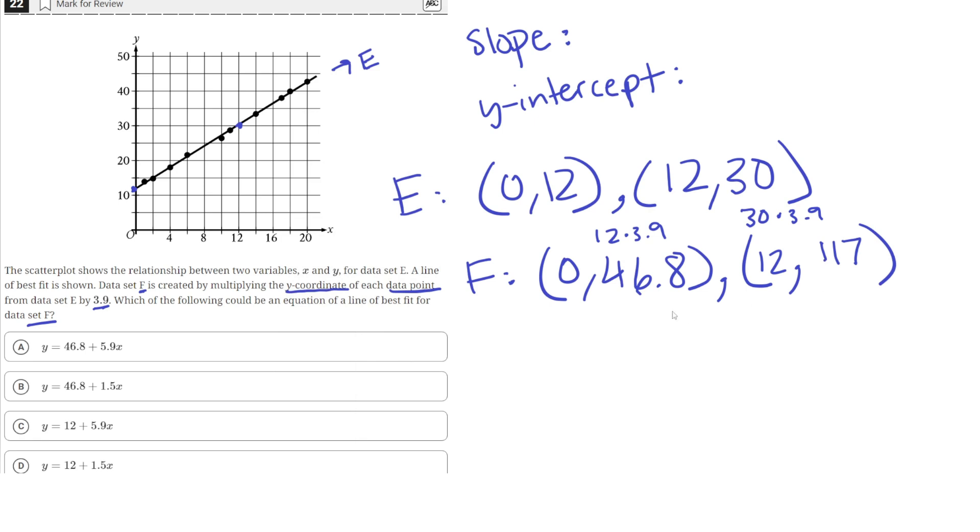So, now we have our two points that would be on data set F, or line F, the line of best fit for data set F. So, we can use these two points to find the slope. We usually use M to denote the slope. So, the slope for line F is equal to the change in Y over the change in X for two points on the line.